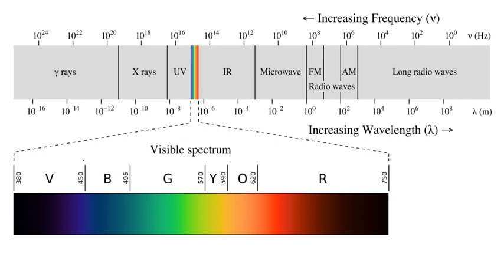Interference is the superposition of two or more waves resulting in a new wave pattern. If the fields have components in the same direction, they constructively interfere, while opposite directions cause destructive interference. An example of interference caused by EMR is electromagnetic interference, or as it is more commonly known, radio frequency interference. Additionally, multiple polarization signals can be combined — interfered — to form new states of polarization, which is known as parallel polarization state generation. The energy in electromagnetic waves is sometimes called radiant energy.